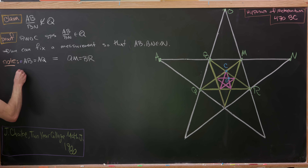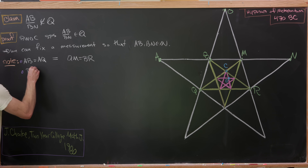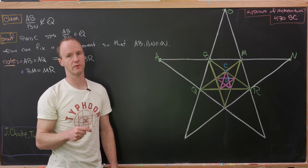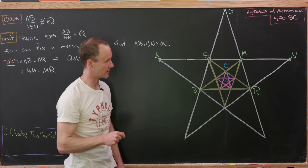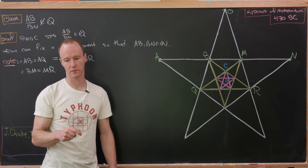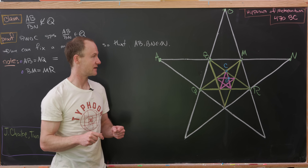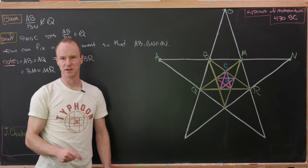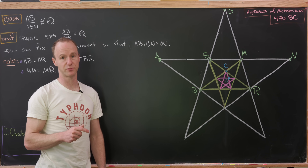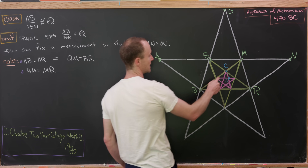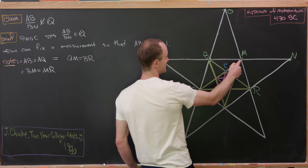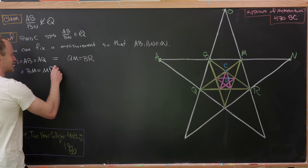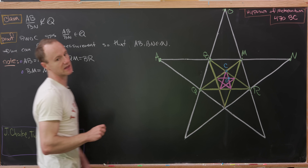Now let's observe that BM equals MR, because in the inner part of any regular pentagram you have a regular pentagon, and those are sides of that regular pentagon. Extending this further: triangle CMR is isosceles — another simple homework exercise — and therefore MR has the same length as CR.